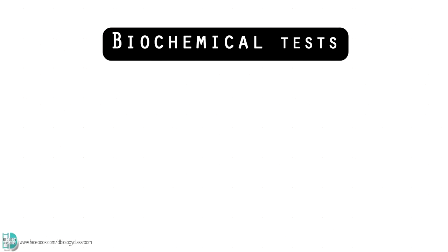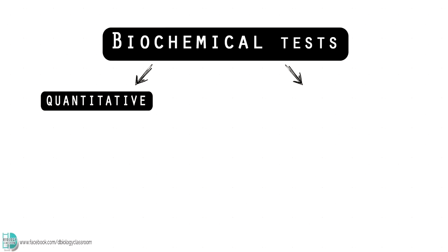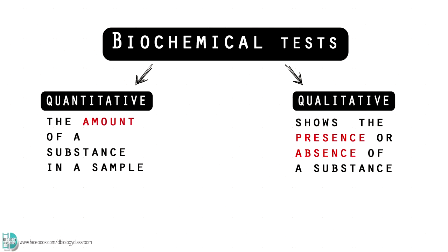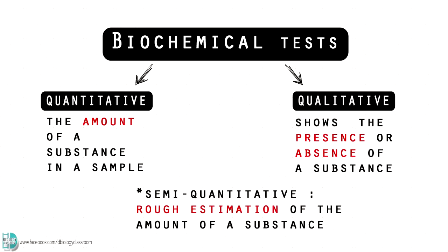Biochemical tests can be categorized into two major groups based on the nature of their results. They can be quantitative or qualitative. A qualitative test only shows you the presence or absence of a substance in a sample, while quantitative tests show you the amount of the substance in a sample. Sometimes a test might give you a rough estimation of the amount of a substance — it is known as a semi-quantitative test.